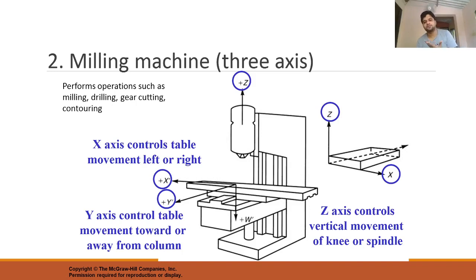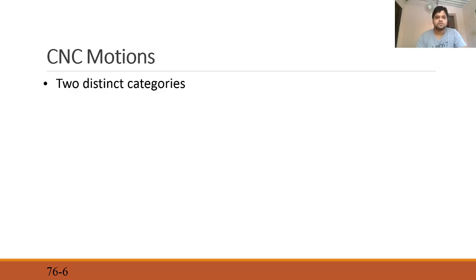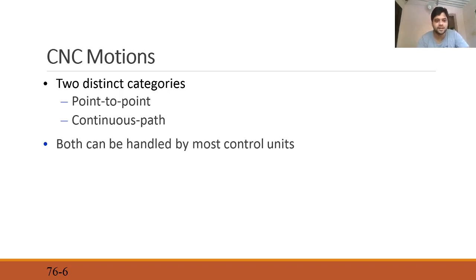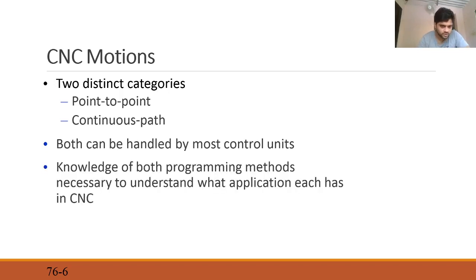This is a simple 3-axis VMC. We also have 4-axis, 5-axis, and even 6-axis VMCs available which can perform literally all types of operations. There are two distinct categories of basic motions: point-to-point motion and continuous path motion. Both can be handled by most control units, and knowledge of both programming methods is necessary to understand what application each has in CNC.